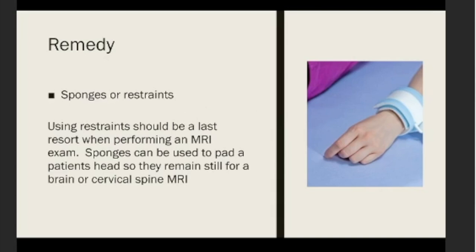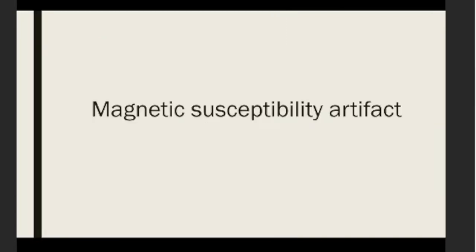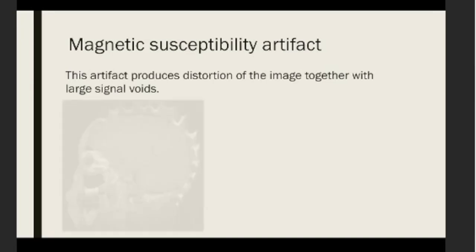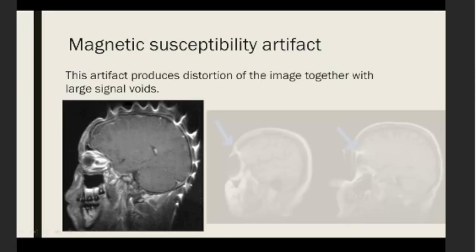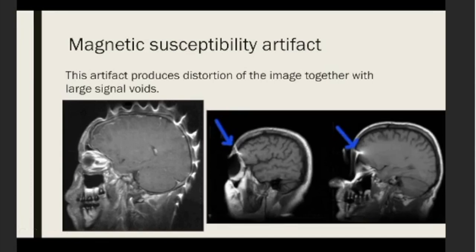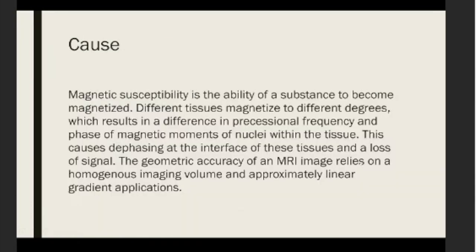Now we will move to another artifact that is not 100% from the patient, but in which the patient plays a significant part — it's called the magnetic susceptibility artifact. This artifact produces distortion of the image together with large signal voids. For example, a brain MRI of a woman who dyes her hair: the dye has metallic ingredients that create this artifact. Similarly, a patient with an eyebrow tattoo — the tattoo also has metallic ingredients that produce magnetic susceptibility artifact.